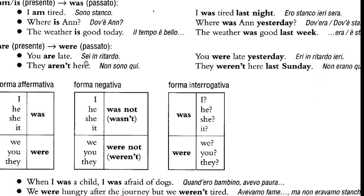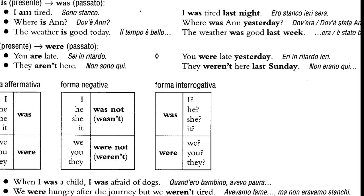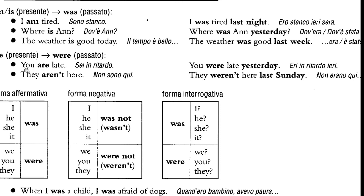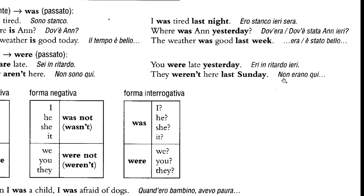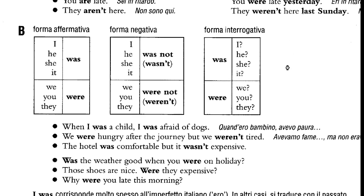So 'you are late' — 'sei in ritardo' — becomes 'you were late yesterday' — 'eri in ritardo, ieri'. If the subject is 'you', no matter if it's singular or plural, 'are' becomes 'were'. And also you can take a look at the example with the third person plural: 'they aren't here' — 'non sono qui' — 'they weren't here last Sunday' — 'non erano qui domenica scorsa'. So if you look at the scheme...